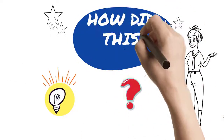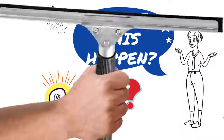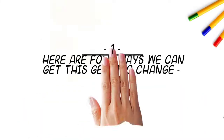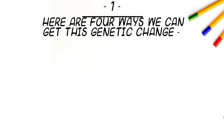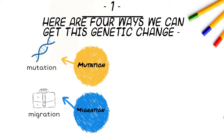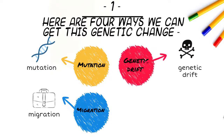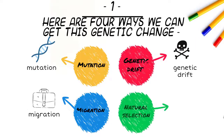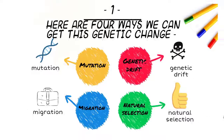How did this happen? There are four ways that we can get this genetic change: mutation, migration, genetic drift, and natural selection.